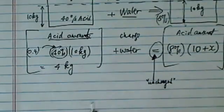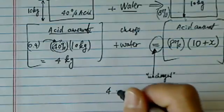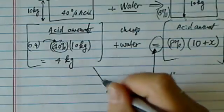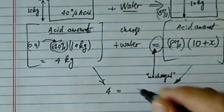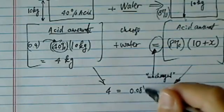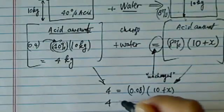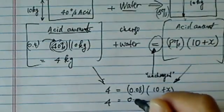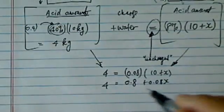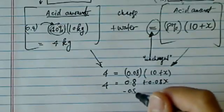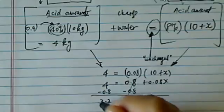Now from here, if you can get to this step, it's really easy, the rest of the stuff. So you have 4 kilograms here equals to, on this side, equals to the acid amount of 0.08 times 10 plus X, which equals 4, is equal to 0.8 plus 0.08X. Solving this little equation is pretty easy. That's minus 0.8 on both sides, 3.2 here is equal to...